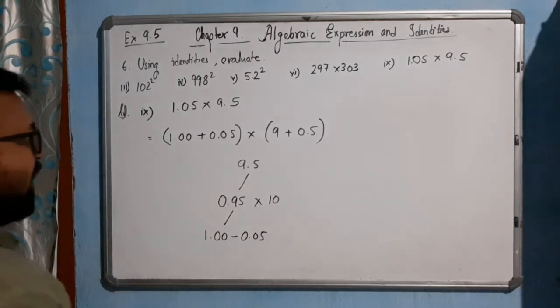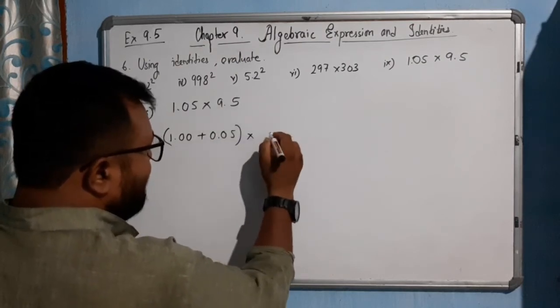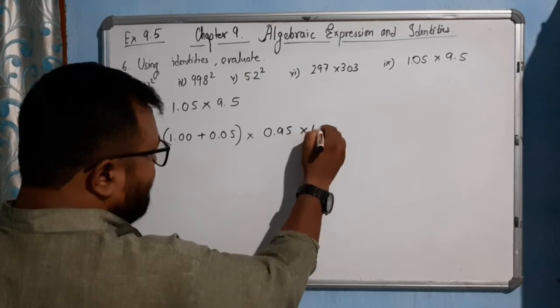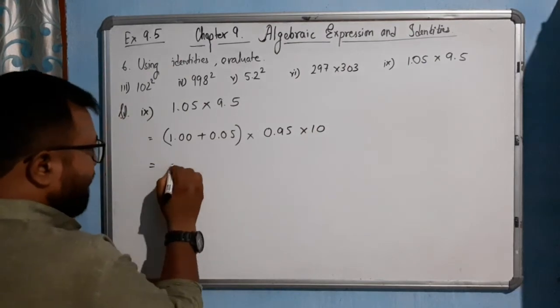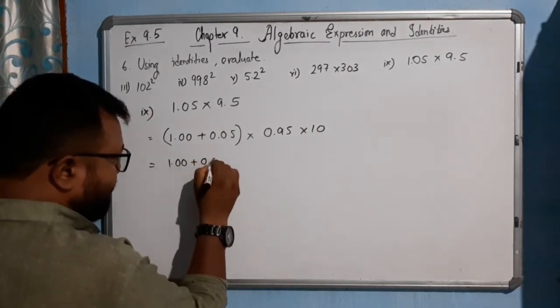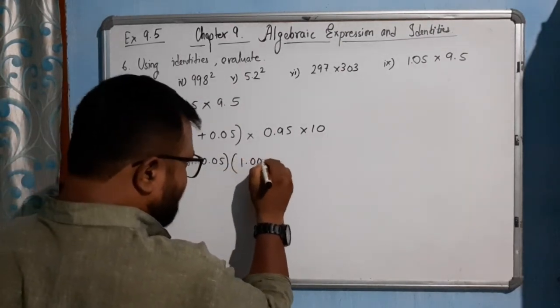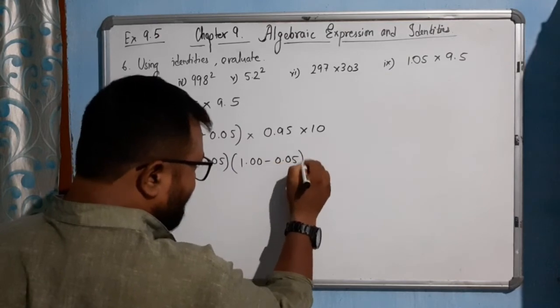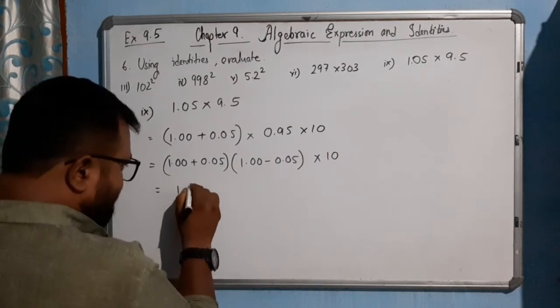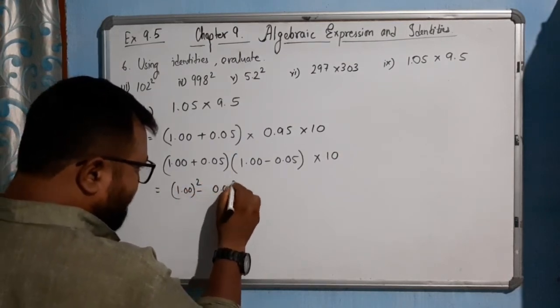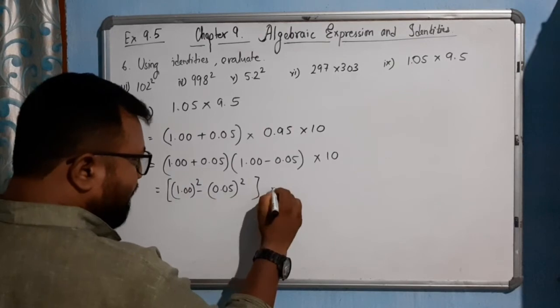So in this case, we can write this one: 1.00 plus 0.05 into this part we can write as 1.00 minus 0.05, then into 10. Here a plus b, a minus b means 1.00 square minus 0.05 square, and this part will be into 10.